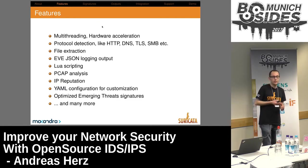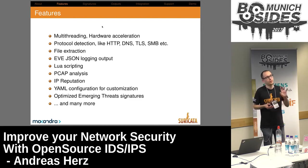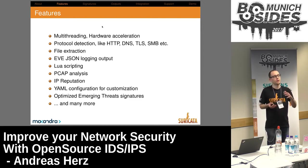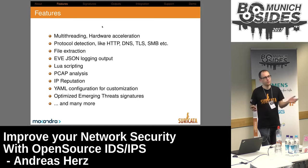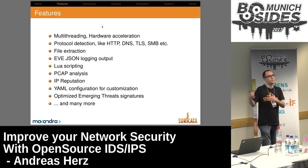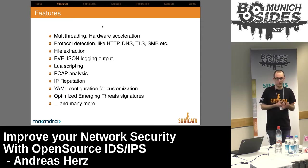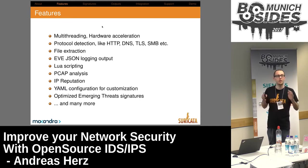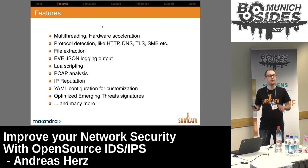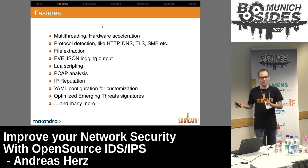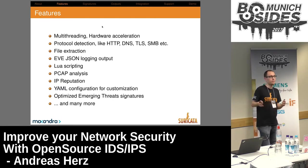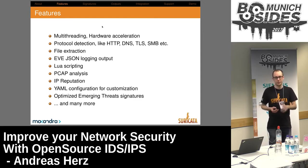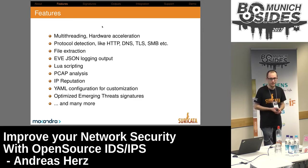One feature I'll show you later is file extraction: while sitting on your network you can extract files from traffic — for example, from HTTP traffic you can extract pictures, PDFs, or even binaries. Another nice feature is the EVE JSON logging output — you get a lot of information out of it. Then it's your job to make the best of it, maybe by putting it into an ELK stack or Splunk.